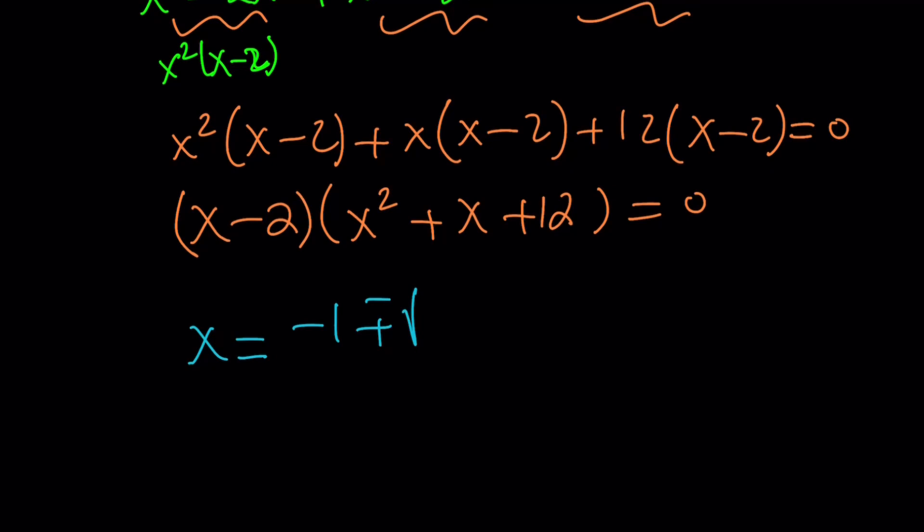That's going to be negative 47. And I can kind of write it as square root of 47i divided by 2. So those are going to be the complex solutions, and x equals 2 is going to be the only real solution for this problem. So far, so good?